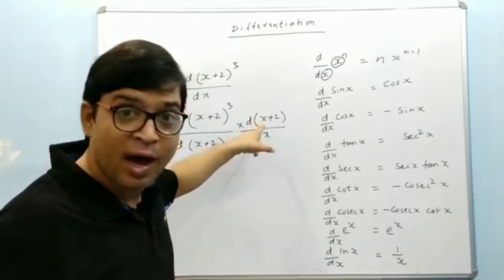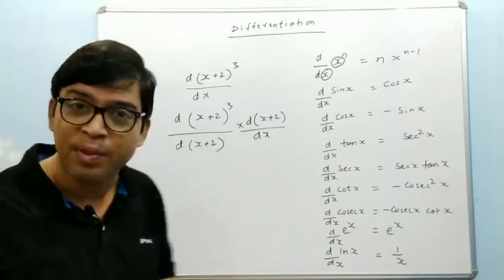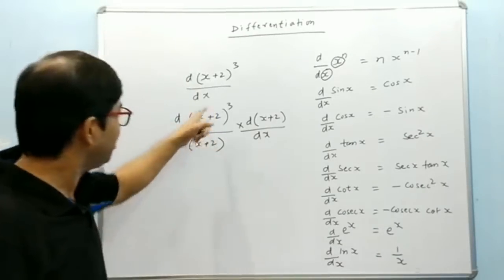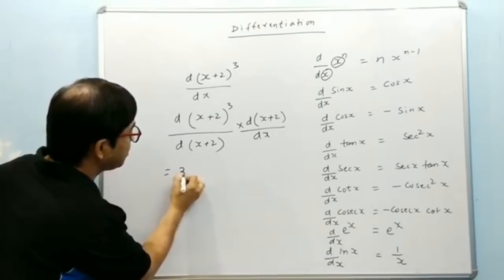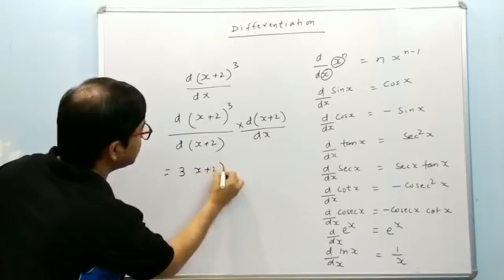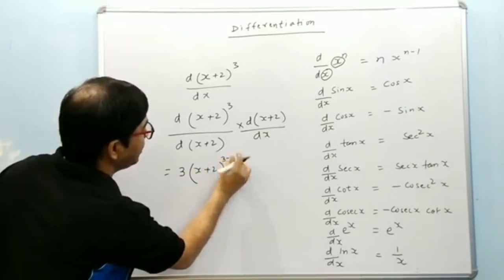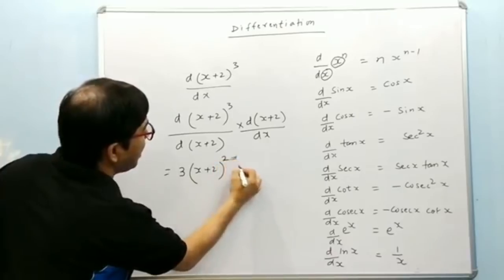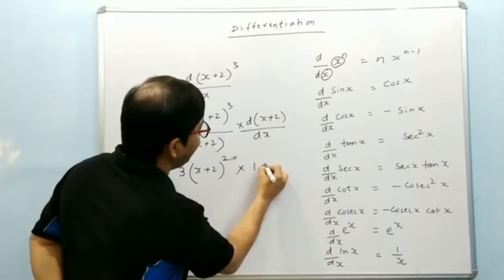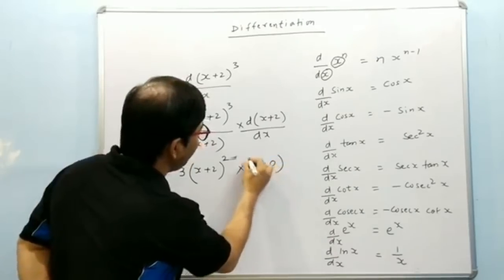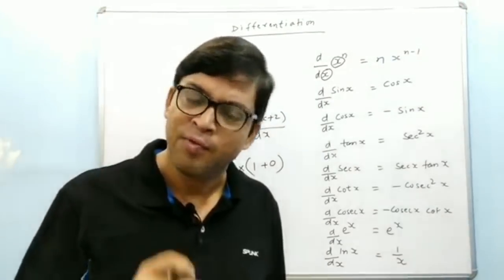I have written this thing here to balance it out. Now it will give the result: something to the power n with respect to that is n into that thing — so 3 into (x+2) to the power n minus 1, that is 2. And here, differentiation of x is 1 and differentiation of 2 is 0 — we know that differentiation of a constant is 0. Very much clear.